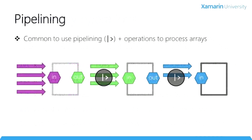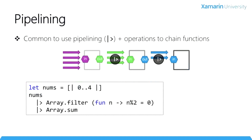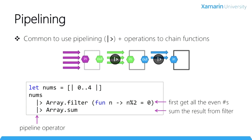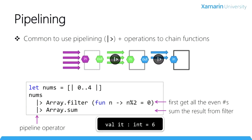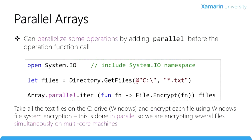Pipelining is a feature of F-Sharp where we can take the results from one function and feed or pipe it into the next function to get a result. This is a really powerful feature you'll find yourself using more often as you become familiar with F-Sharp and functional programming. In this example, we use the pipeline operator to chain two functions off an array of integers representing numbers zero to four. The first function filters the array to produce only the even numbers, and the next one sums all the even numbers to produce a single result, which is six.